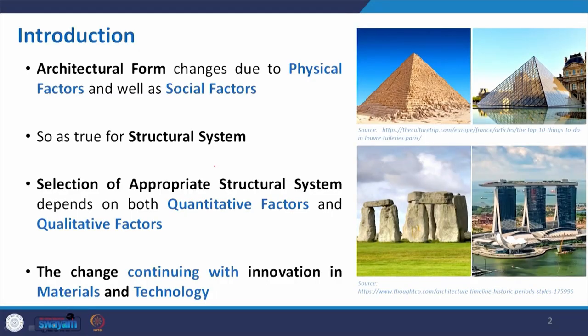Basically, architectural form actually changed over time due to some physical factors as well as some social factors. Earlier, technology was not well known, not that much material was available, and methods of construction were not that advanced. So people built their shelter or any structure based on available materials - mostly stone - and they used that. As we have already seen in the last lecture, they created megalithic structures made of stone slabs, then post-lintel, and these are some of the physical factors that influenced it.